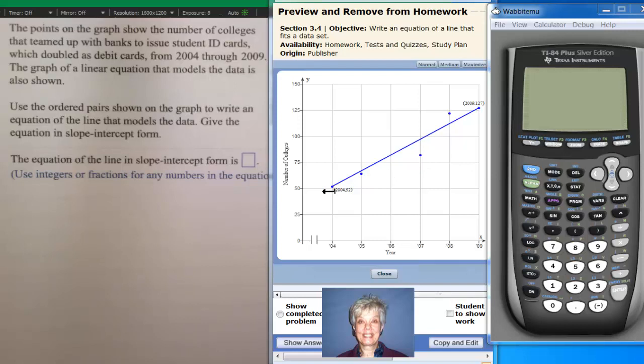Anyway, notice that only two of these points are on the actual line right there, and that the rest are near the line, but they're not on the line. This is called a linear regression, or a best fit line, and it's the way most lines are built. You'll learn how to do this in college algebra.